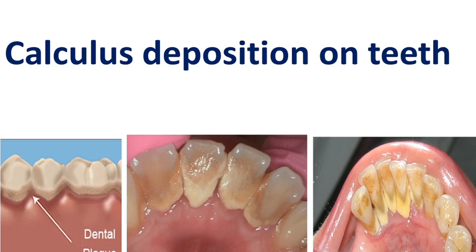So, what is calculus? Calculus is a calcified deposit found on teeth, formed by mineralization of plaque deposits. As we can see here, this yellow creamy calcified deposit is found on the lower anterior teeth lingually. It is normally found there due to inaccessibility.